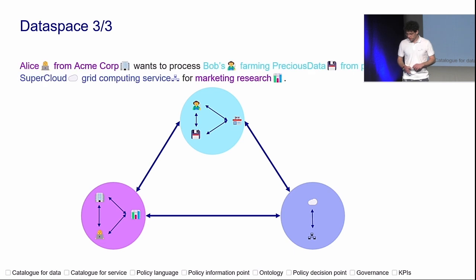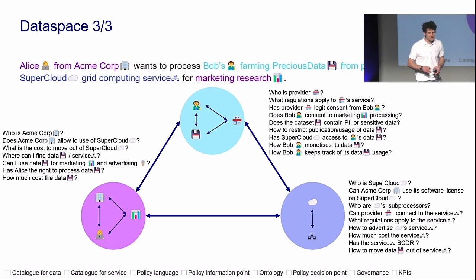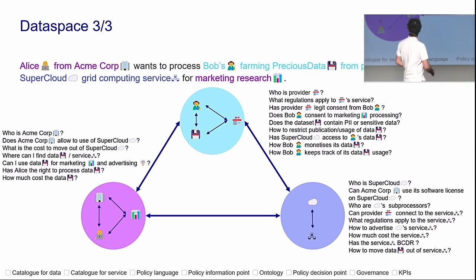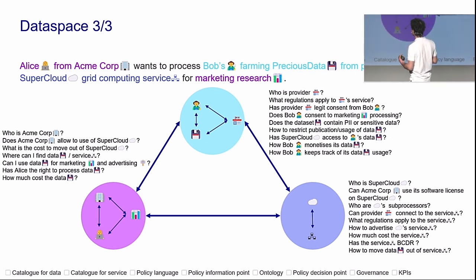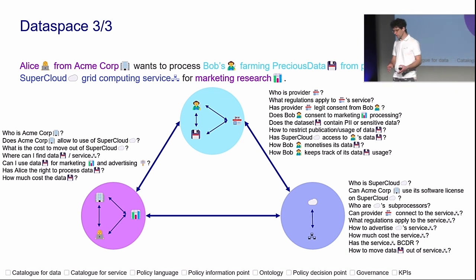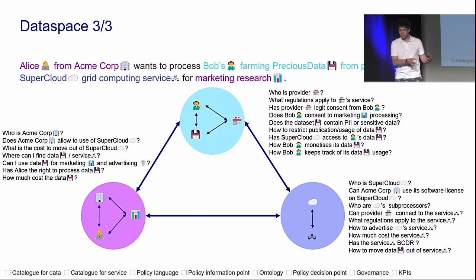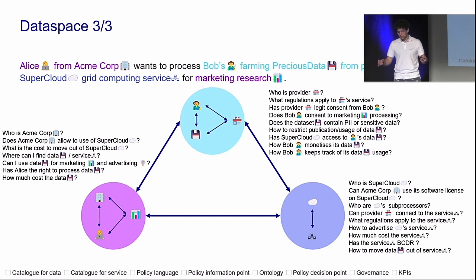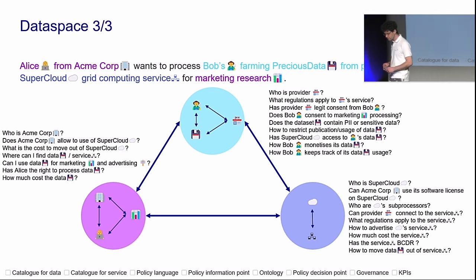Back to our scenario. We have Alice, Bob, and Super Cloud, and they ask themselves a lot of questions. Who is AcmeCorp? Who is the provider? Who is Super Cloud? What is the cost to move data out of Super Cloud once I've started processing there? What regulations apply to every party involved? If Alice gets data for marketing, can she use the same data for advertising? Is it part of the contract? How does Bob enforce that data is not used for something else? How does Bob monetize and trace the data? All those questions map to the three pillars of the association.